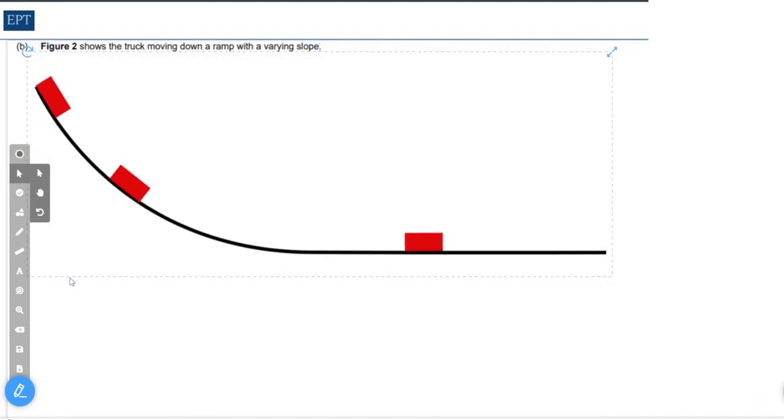Let's consider the forces acting on the bottom position, i.e. when it's horizontal. First of all here's the weight and here's the reaction, which is at 90 degrees to the surface.